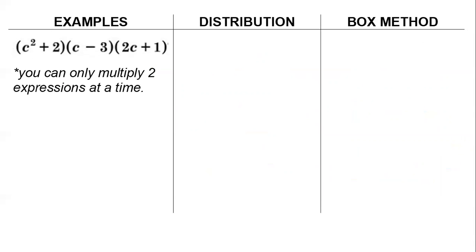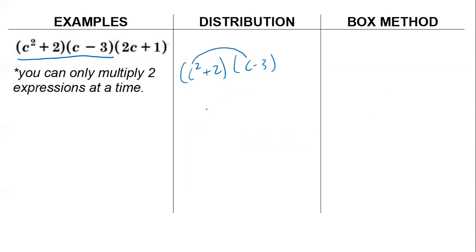What if you have more than two polynomials? If you have more than two polynomials being multiplied, you can only multiply two expressions at a time. So you choose which two to start with and go from there — then multiply their product by the last one. Starting with c squared plus 2 times c minus 3: c squared times c is c cubed, c squared times negative 3 is negative 3c squared, and 2 times negative 3 is negative 6. So the product is c cubed minus 3c squared plus 2c minus 6.